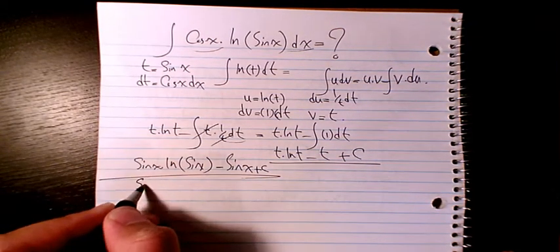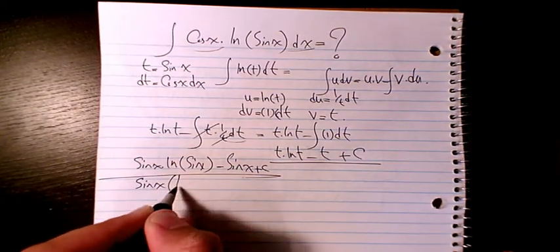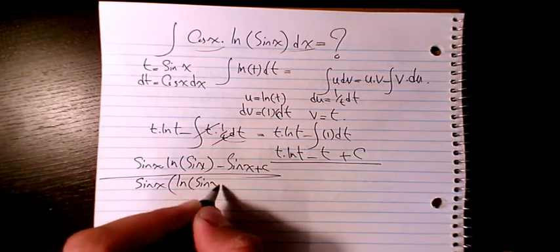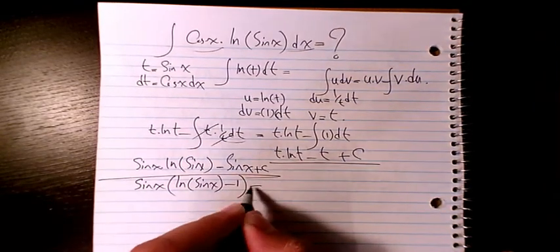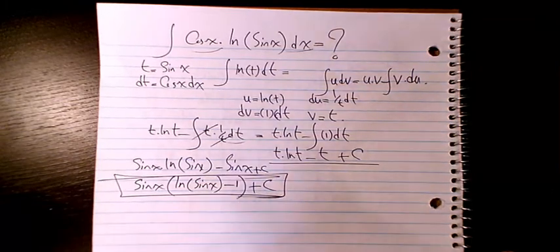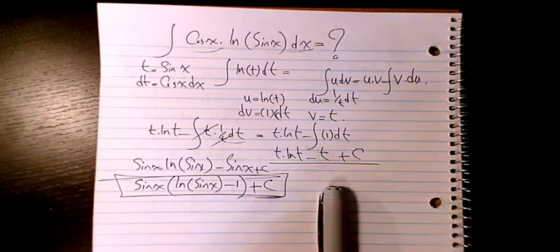Or you can also write it like sine x times (ln sine x minus 1) plus a constant number. So that's the final answer.